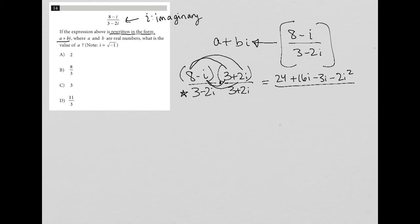And on the bottom, when I do the exact same thing, I end up with, again, first times first is 9. 3 times that is plus 6i. Negative 2i times 3 is minus 6i. Negative 2i times 2i is negative 4i squared.